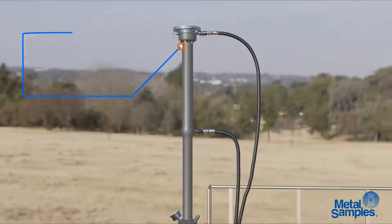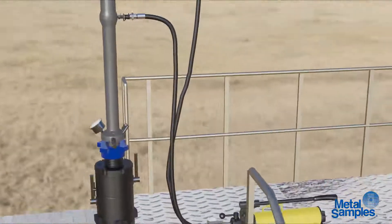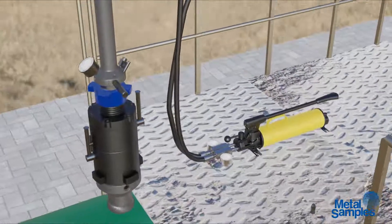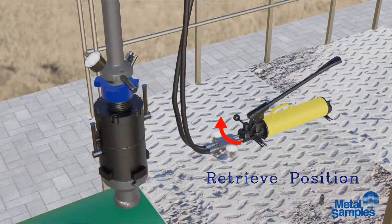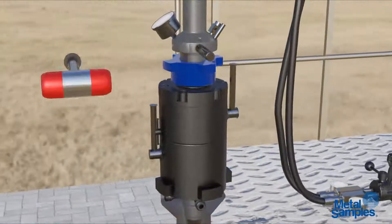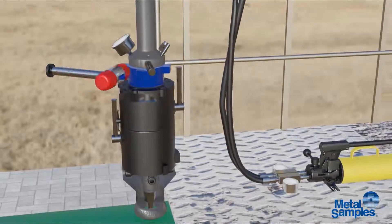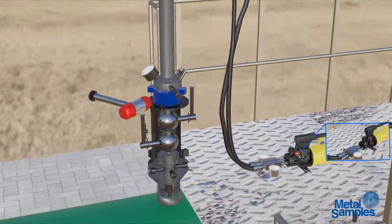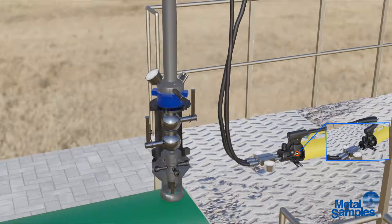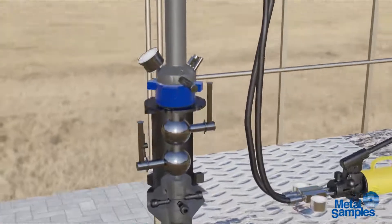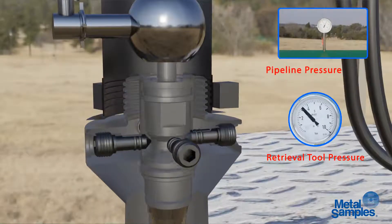Open the head valve again. Set the pump to install position and pump until the pressure in the retriever is at least 30 to 50 bar higher than the pressure inside the pipeline.